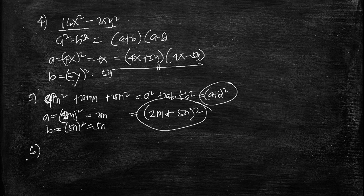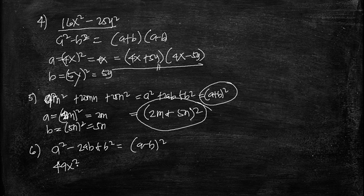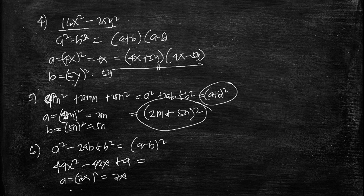Number 6 is 49x² − 42x + 9. This is in the form a² − 2ab + b² = (a − b)². Here a = √(49x²) = 7x, and b = √9 = 3. So the factored form is (7x − 3)².